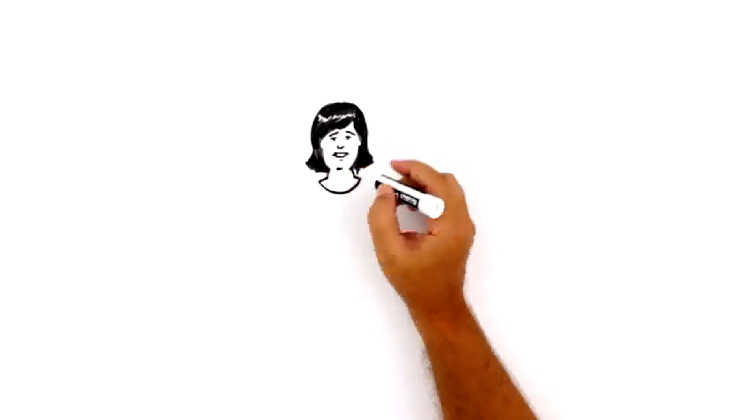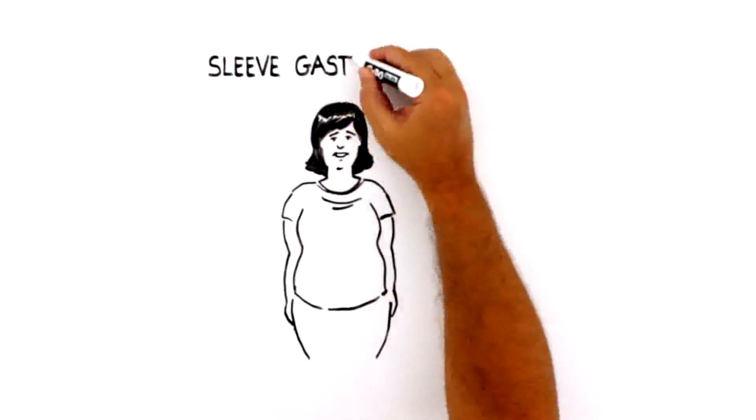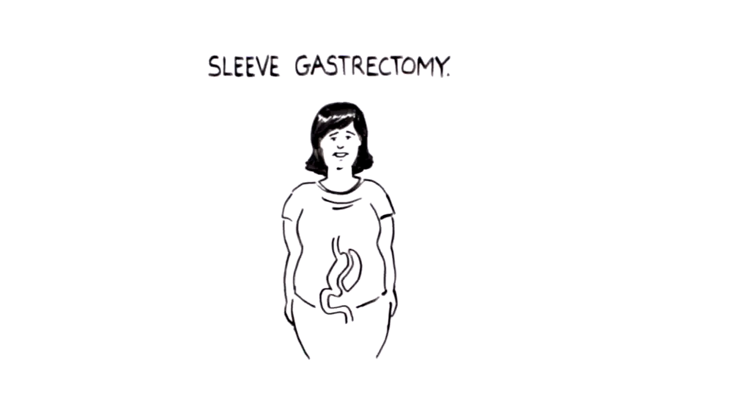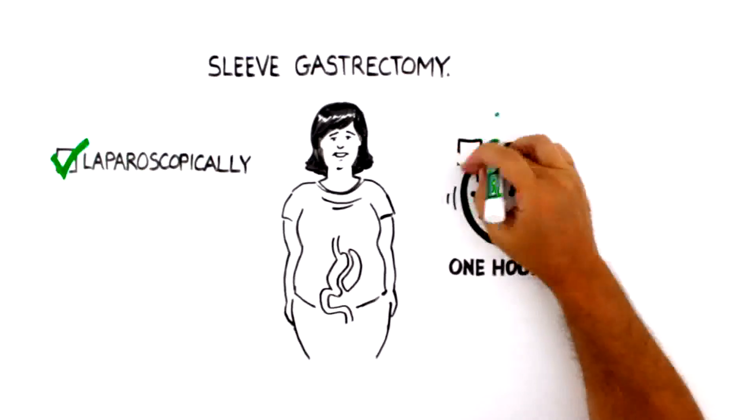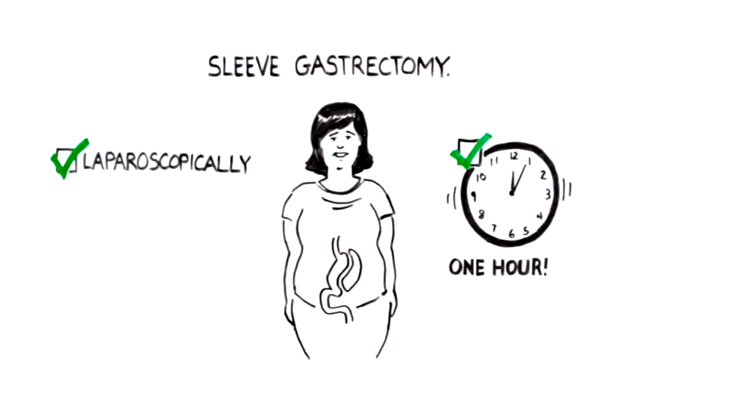After talking with her surgeon, Sarah chooses to have a sleeve gastrectomy. The surgery is done laparoscopically with a few small incisions, takes about an hour to complete, and she spends one night in the hospital before starting her new life.